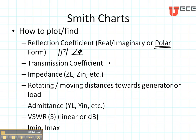The transmission coefficient T is one plus the reflection coefficient. We also look for that in polar form, so we get a magnitude and a phase of the transmission coefficient by reading off the correct circles and lines.